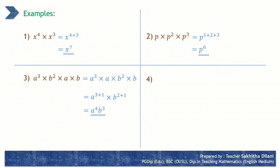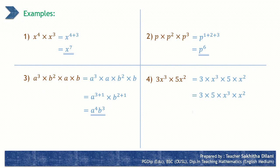Let's consider another example: 3 x to the power 3 into 5 x to the power 2. Let's write it by expanding: 3 into x to the power 3 into 5 into x to the power 2. First, the numerals are written together: 3 into 5 into x to the power 3 into x to the power 2. The product of 3 and 5 is 15. Since the bases of the two powers are equal, you can add their indices: x to the power 3 plus 2. So the answer is 15 x to the power 5.